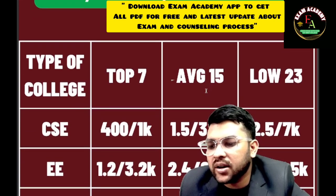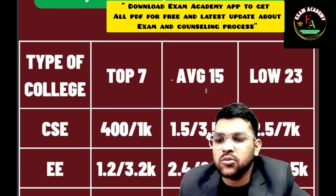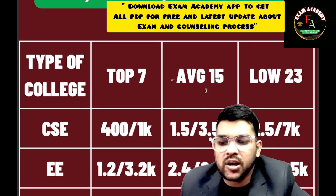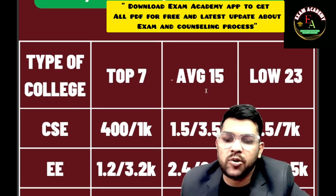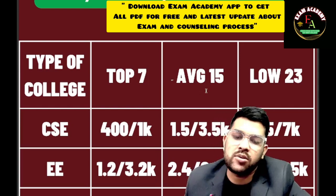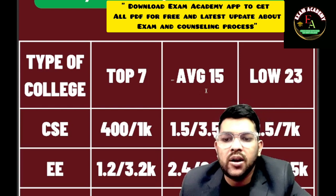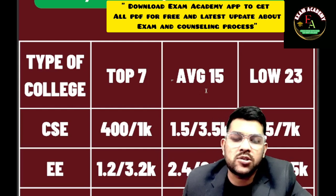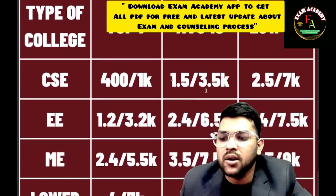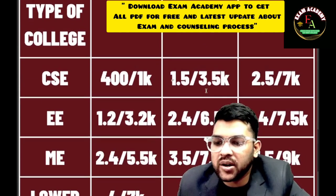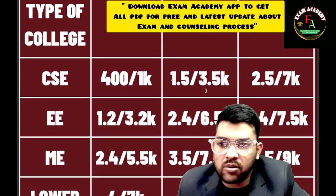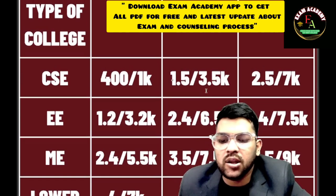For Electrical Engineering, in the top 7 IITs you need around 1,200 rank for male and 3,200 for female. For average IITs, around 2,400 for male and 6,500 for female. For lower IITs, around 4,400 for male and 7,500 for female. Female ranks are higher because of the 20% supernumerary reservation for female students.